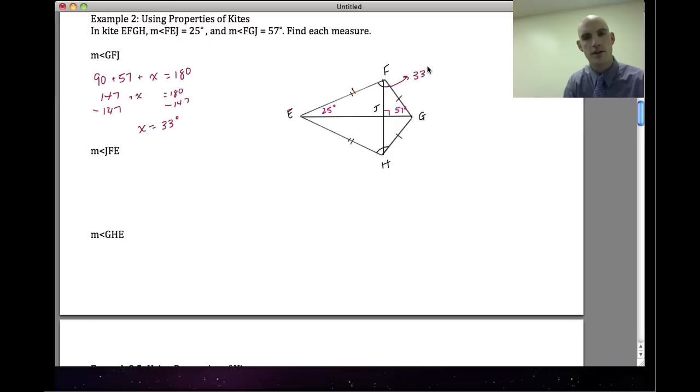So this angle here is going to be 33 degrees. I also want to find JFE, so I'm going to find the other half of this angle. Once again, I have this 90-degree angle here, and so I have 90 plus 25 plus the angle that I don't know here, x, is equal to 180. So if I solve this, 115 plus x is equal to 180, then I end up with x is equal to 65 degrees. So I can mark this one as 65 degrees.